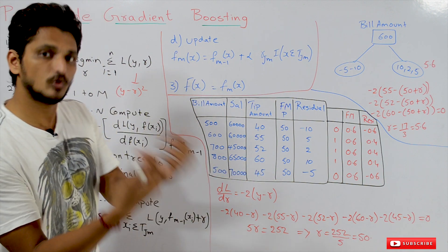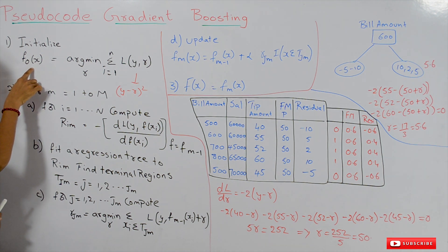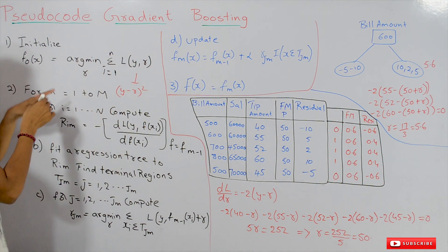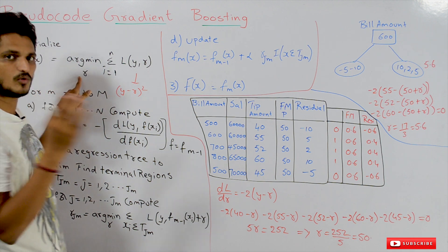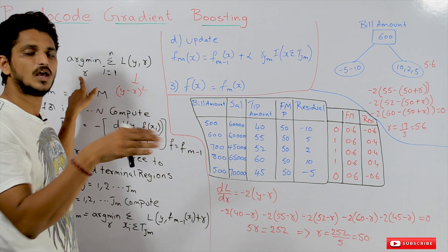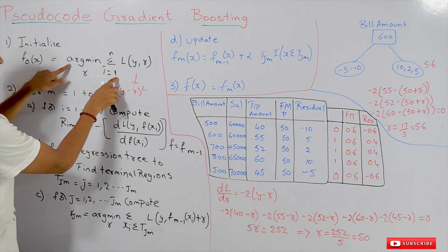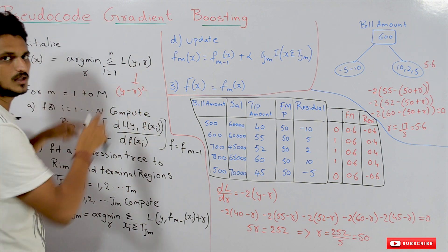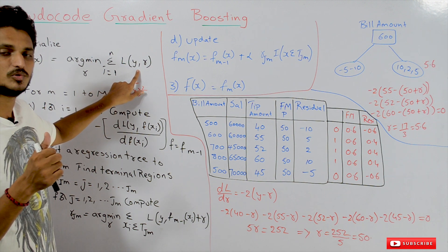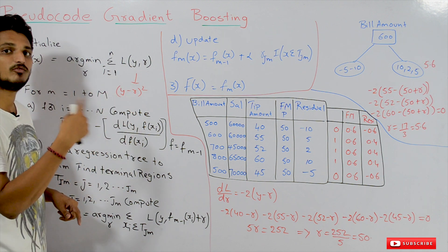Coming to the pseudo code, the initialization step is: f₀(x), our zeroth model, is equal to the solution of the optimization problem — argmin over gamma of the summation from i=1 to n of L(y, gamma). This is our loss function used in gradient boosting: mean squared loss.